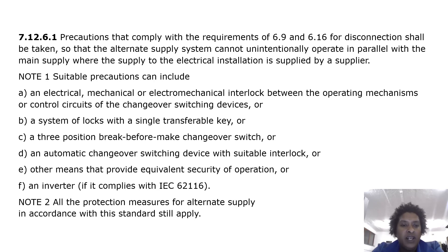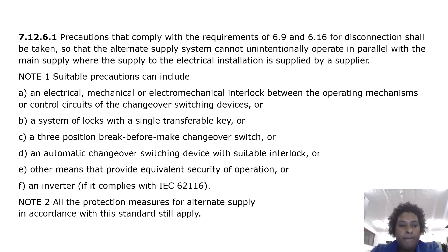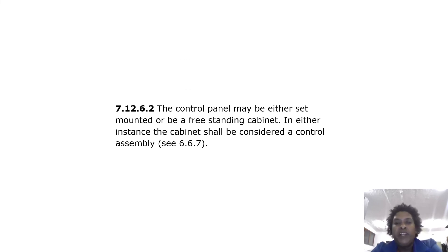Further suitable precautions include: a three-position break-before-make changeover switch; an automatic changeover switching device with suitable interlock; other means providing equivalent security of operation; or an inverter complying with IEC 62116. Note: all protection measures for alternate supply in accordance with this standard still apply. The control panel may be either set-mounted or a freestanding cabinet; in either instance the cabinet shall be considered a control assembly.